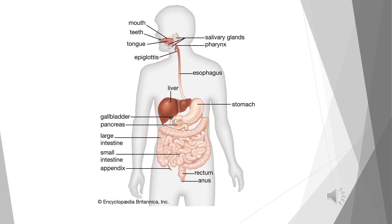Here we see the parts of the digestive system. First, we are going to talk about the mouth. The mouth and the related parts found in the buccal cavity are shown here — the teeth, tongue, and the accessory salivary glands — and we will talk about them in detail in future lessons. Then you have the pharynx, and then you have the epiglottis.